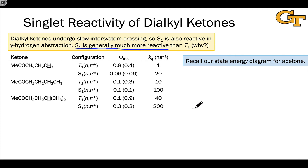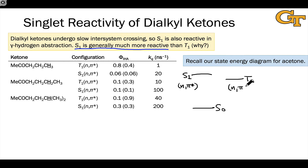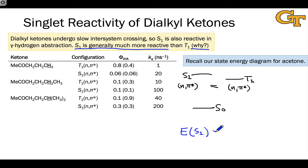This is true despite lower quantum yields in some cases, because the efficiency of hydrogen abstraction can be much lower for singlets than triplets. Intersystem crossing is relatively slow in dialkyl ketones because the S1 state is essentially purely n-π* in electron configuration, and the T1 state — fairly close in energy — also has n-π* configuration. The state energy diagram explains why S1 is generally more reactive: S1 is higher in energy, so photochemical reaction to the same ground state products is more exothermic from S1 than from T1.